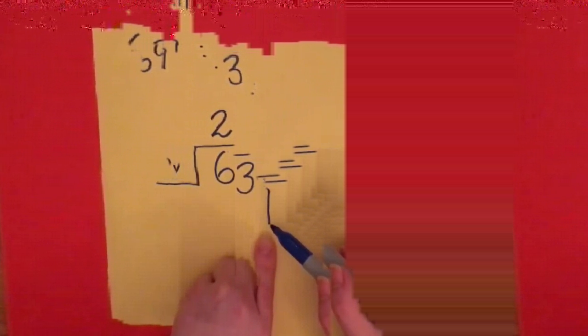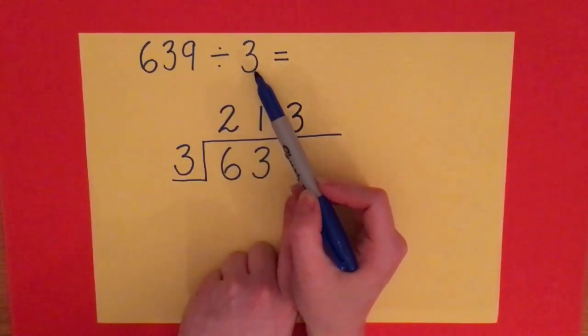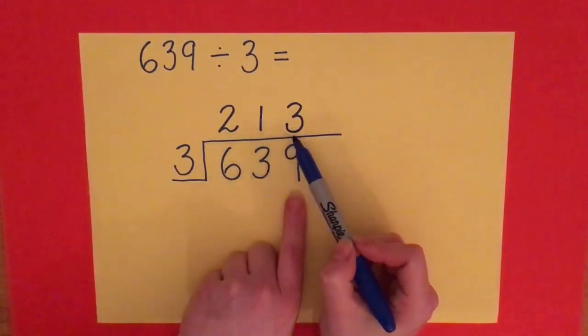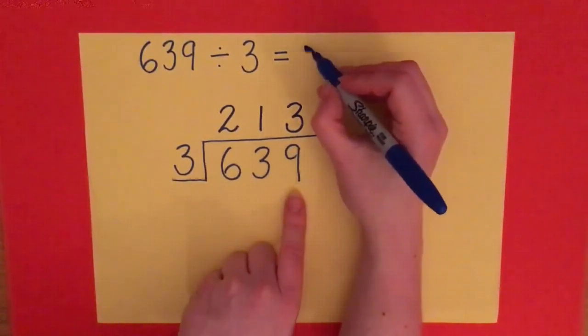Okay, so we've got: what is 639 divided by 3? The answer is on top of your bus stop: 213.